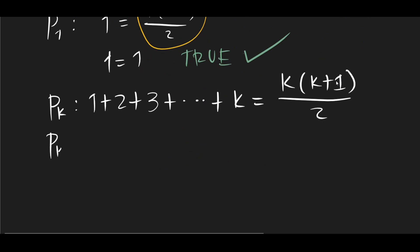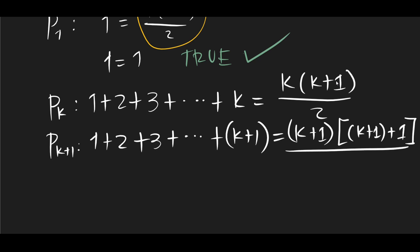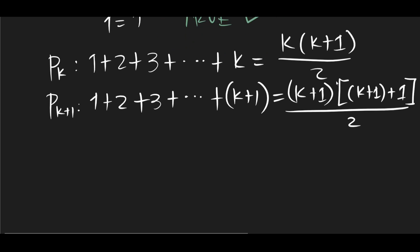So the next one, Pk plus 1. What is it? 1 plus 2 plus 3 plus k plus k plus 1 equals k plus 1 times k plus 1 plus 1 all over 2. Now, if we simplify this right-hand side, you will get k plus 1 multiplied by k plus 2 all over 2.